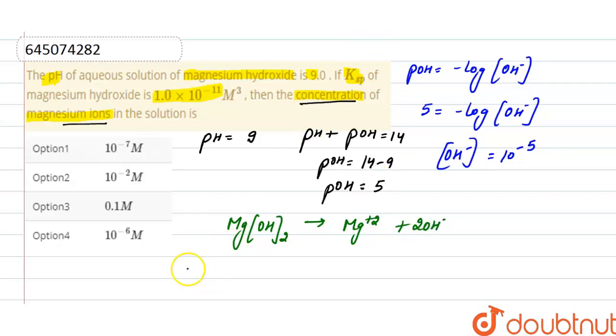Now how we write Ksp? Ksp it is equals to concentration of ions in the solution. And ions here are magnesium ion and OH ion. And here 2 is present as a stoichiometric coefficient, so we will raise the power by 2.